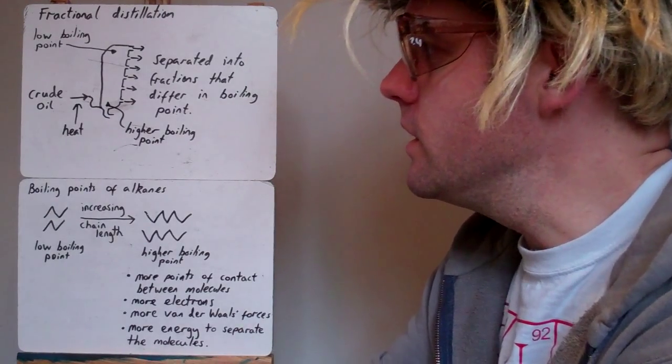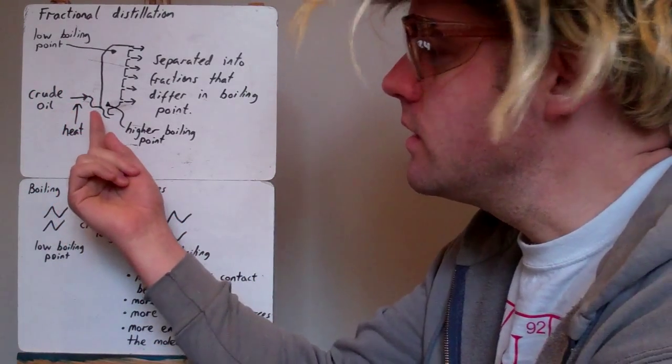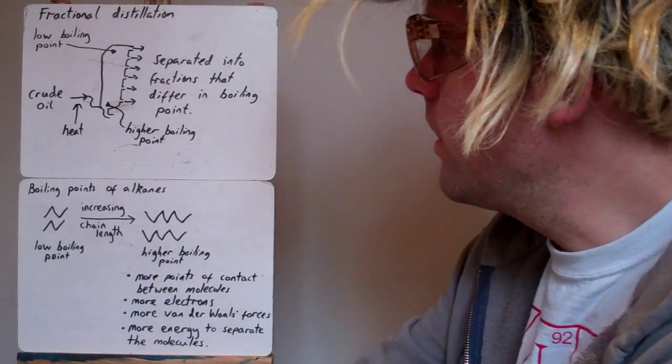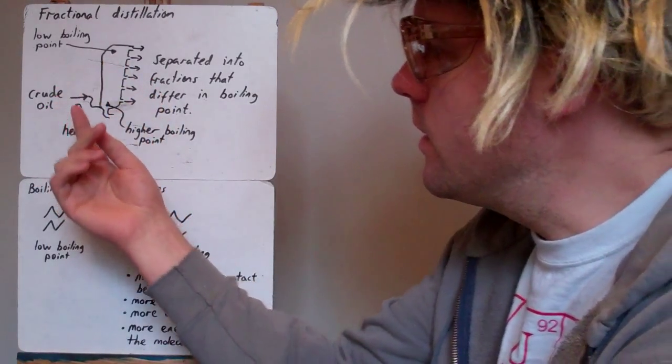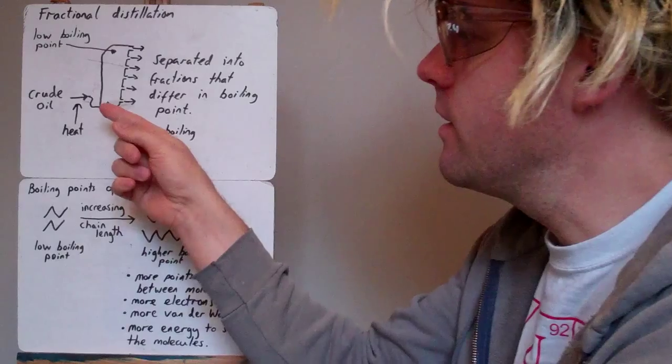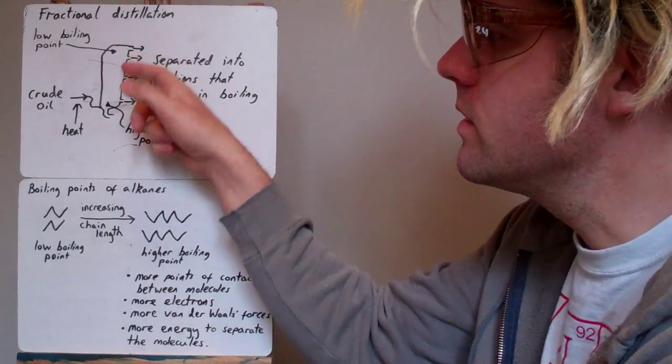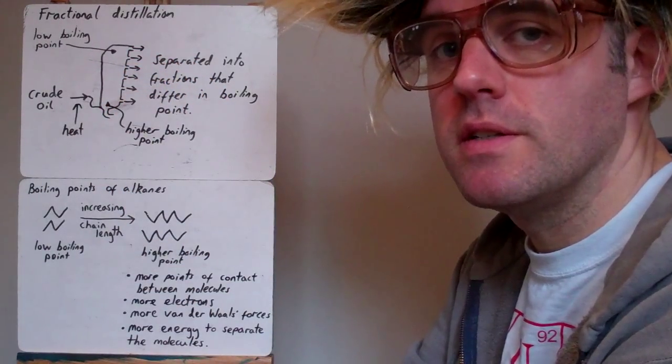You've probably seen a lot of this at GCSE. Crude oil comes in, it's heated very strongly, and then the fractions within the crude oil evaporate and they condense, depending on their boiling point, at different parts on the fractionating column.